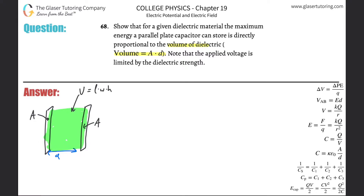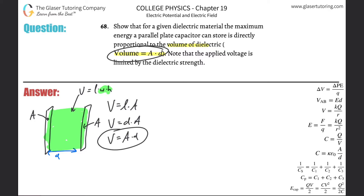So essentially in this formula, this is the area. The volume would then be equal to the length multiplied by the area, and the length in this problem is the distance between the two plates, which is d. So that's how it arises that volume equals d times A, which is exactly what they stated — volume equals A times d.